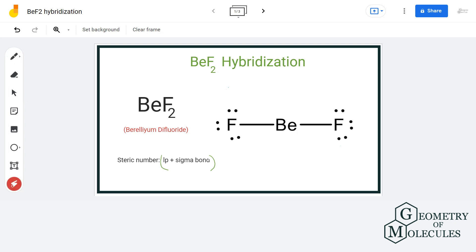Let us have a look at the Lewis structure of BeF2. We can clearly see that central atom beryllium has formed two sigma bonds with two fluorine atoms and has zero lone pairs of electrons.